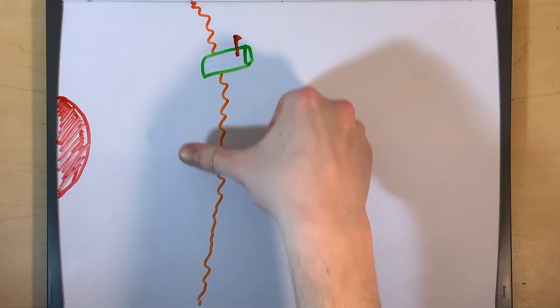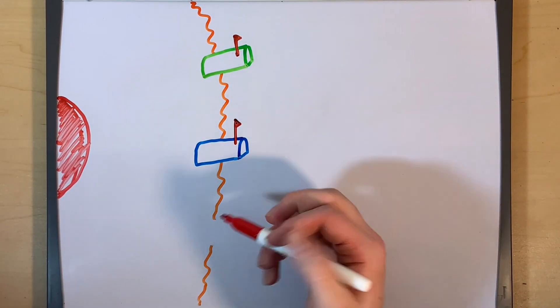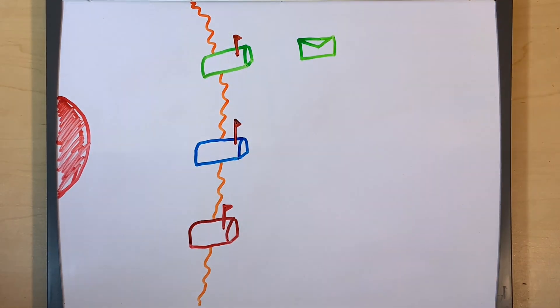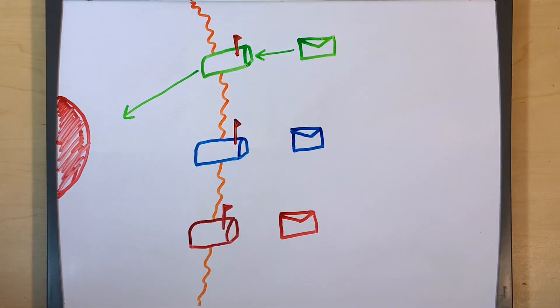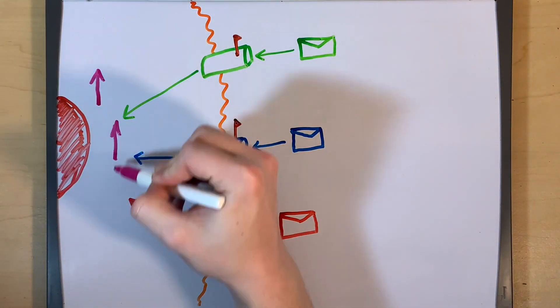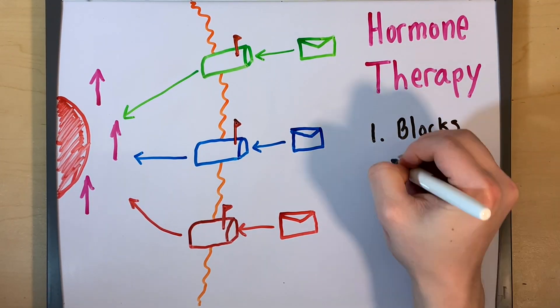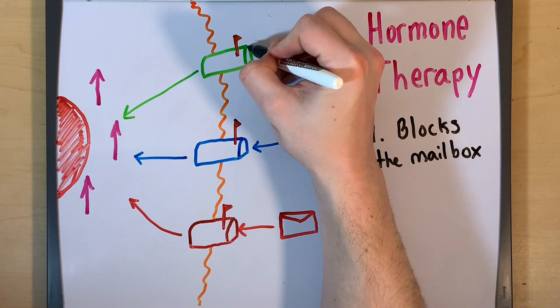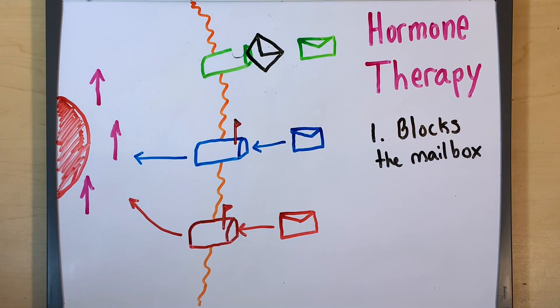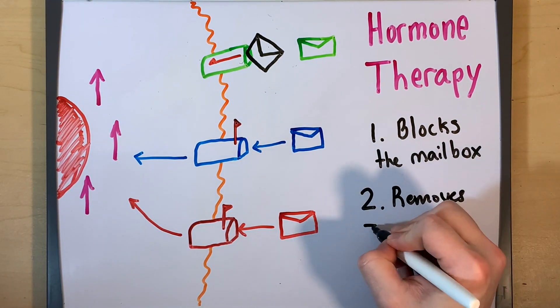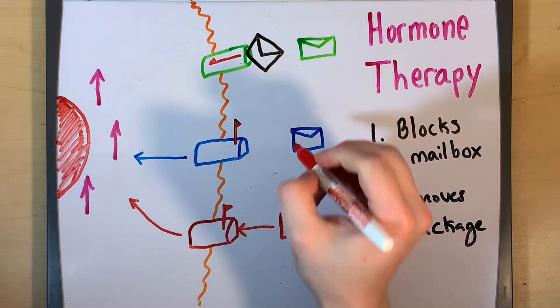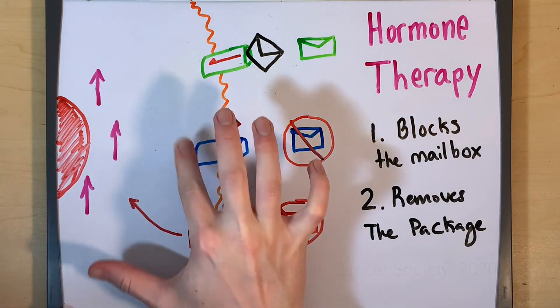Hormone therapy in the treatment of breast cancer works by disrupting the signals received through these receptor mailboxes that cause the cancer cell to grow. Hormone therapy can therefore be simplified into two processes. Number one is blocking the mailbox with spam so that the regular mail can't get through and the signal can't be delivered. Number two, eliminating the package in the first place so that there is no signal sent through the mailbox.